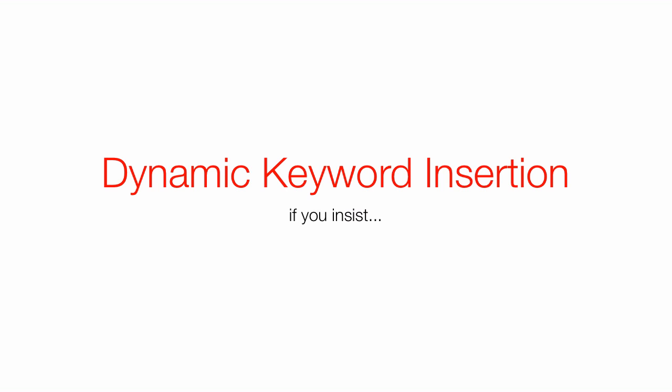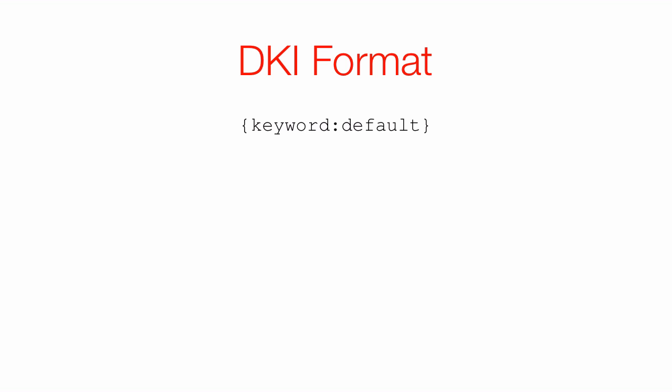Here's how you do it and why you probably shouldn't. The DKI — the Dynamic Keyword Insertion format — is a left squiggly bracket, the word 'keyword', a colon with no space after it, and then the default keyword, and then a close squiggly bracket. You type the word 'keyword' exactly, but you don't type 'default' — instead, default becomes the keyword that would appear if none of the keywords they chose fit.